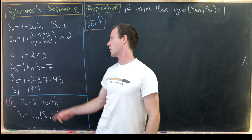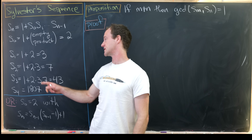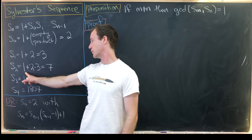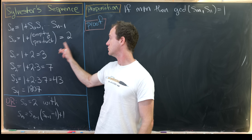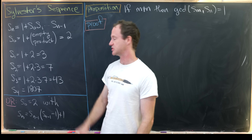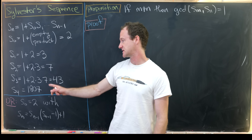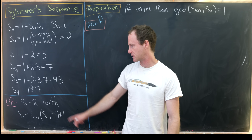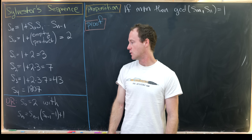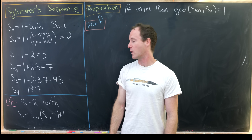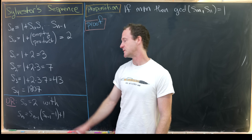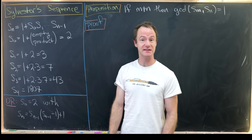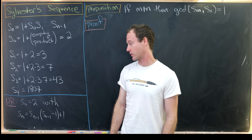S₁ will be one plus two which is three. S₂ will be one plus two times three which is seven. S₃ will be 43 by a similar calculation, and S₄ will be 1807. An interesting fact about 1807 is that's my birth year.